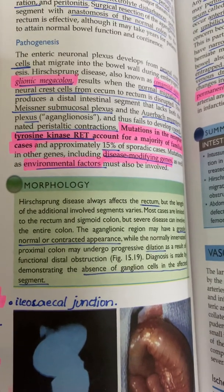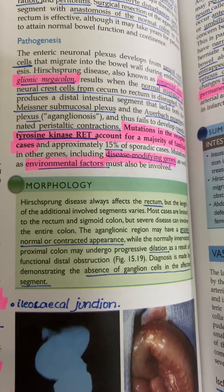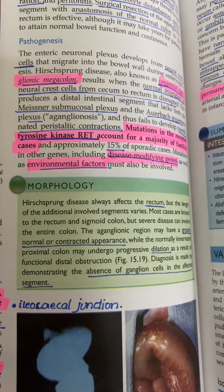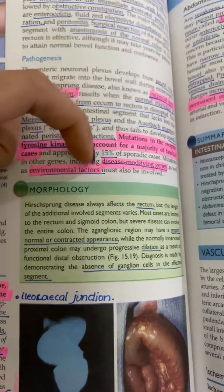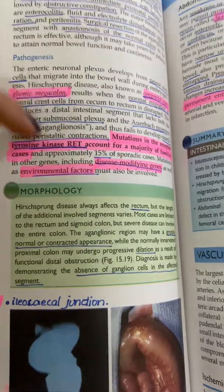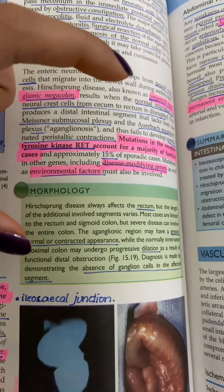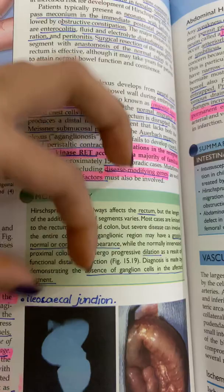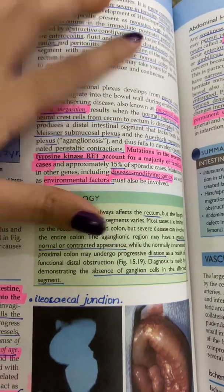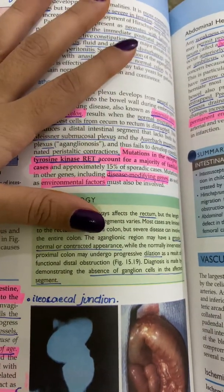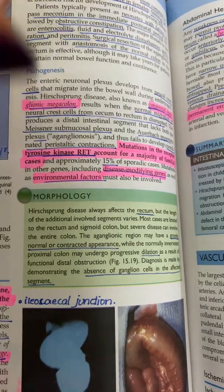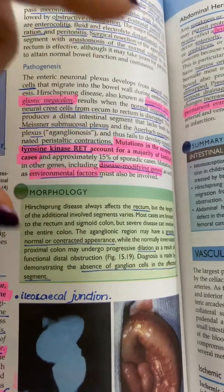Regarding the morphology of Hirschsprung's disease, it mostly occurs in the rectum. Grossly, we see a normal or contracted appearance, but the proximal colon — present proximal to the aganglionic portion — may be progressively dilating due to distal obstruction. The diagnosis is confirmed by the absence of ganglionic cells in the affected segment.